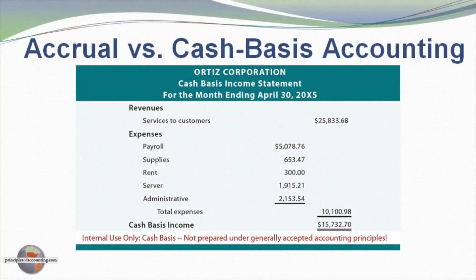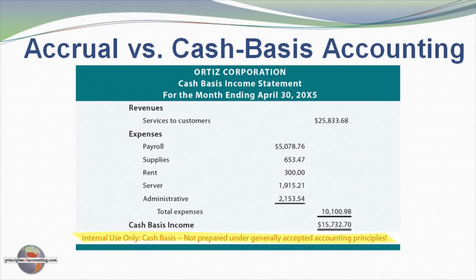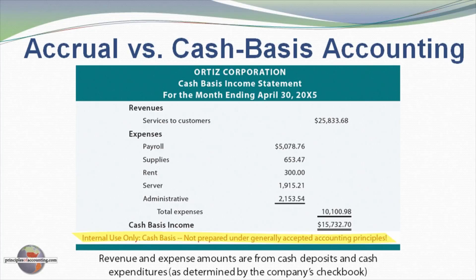Here's Ortiz Corporation's cash basis income statement, and it appears they're doing quite well. Revenues are $25,833 and the various expenses total $10,100. I've noted this is for internal use only — the cash basis financial statement should not be used under generally accepted accounting principles. We got our revenue and expense information from the checkbook, cash receipts, and disbursements records.